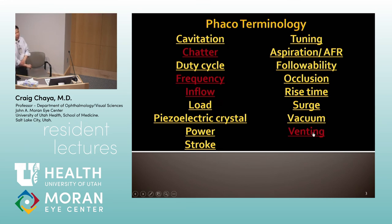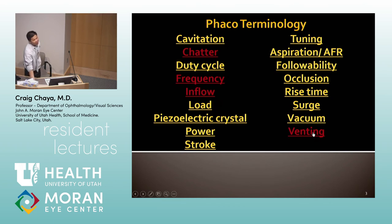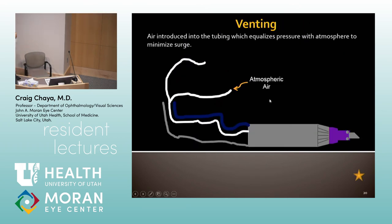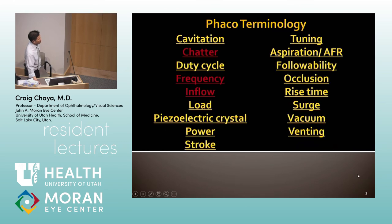Venting has to do with equalization of pressure. Air is introduced into the tubing which equalizes pressure with the atmosphere to minimize surge. The machine takes care of this — you never have to worry about it. It's one more engineering feature to prevent surge. Surge is by far and away the thing we talk about the most, because that's where we have complications.